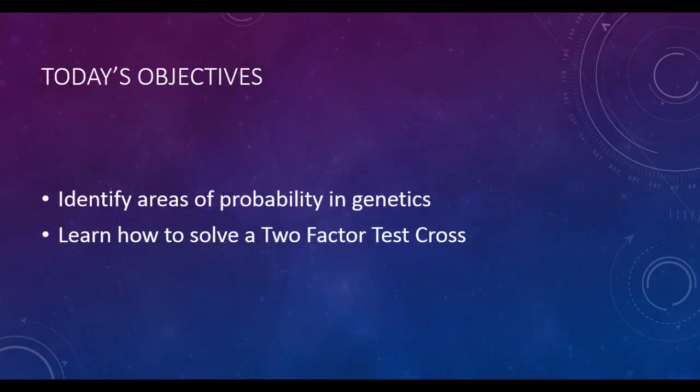Today's objectives were to identify areas of probability in genetics. Same thing with the Punnett Square where we figured out the phenotypic outcomes and the chances of each outcome. We did the same thing today in the two-factor test cross. We learned how to solve a two-factor test cross and basically, from the beginning to the end, we learned how to set it up using FOIL, looking at the different parental combinations and the gamete combinations and we were able to solve the two-factor test cross. Hopefully, this tutorial gave you a little bit of information and a general understanding of how to make a two-factor test cross. Please bring any questions to class. We will be doing a lot of these in class for practice. Thank you.